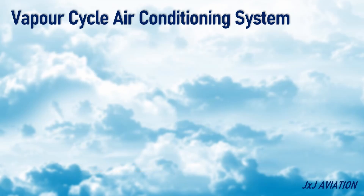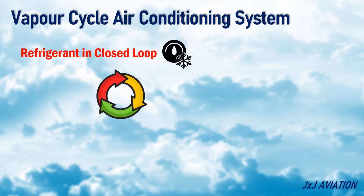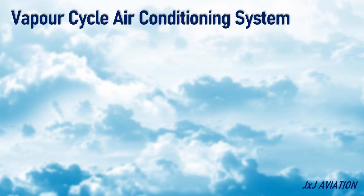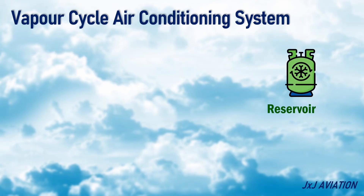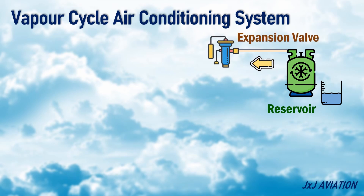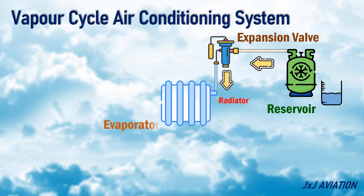Now let's look at the vapor cycle air conditioning system. This system uses a refrigerant in a closed loop for cooling the air inside the aircraft. Initially, consider the refrigerant in the closed loop in the reservoir — here the refrigerant is in the liquid state. The refrigerant flows through an expansion valve, which allows only a small quantity of refrigerant to flow through. The refrigerant then flows through a radiator-type assembly called the evaporator.